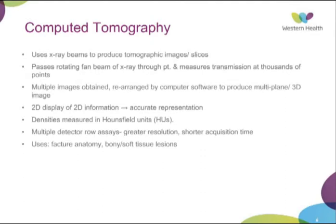Computed tomography is very widely used in orthopaedics, especially with advances in 3D reconstruction. It uses x-ray beams to produce tomographic images — a rotating fan beam rotates around the patient, measuring thousands of points, producing multiple slices. Computer software programs these together to form a 3D multi-plane reconstruction. The value of CT is we get 3D reconstruction and multiple planes: sagittal, coronal, axial, etc. It's a 2D display of 3D information when scrolling through slices, giving a very accurate representation. With CT you can tell exactly where something is in relation to the patient, which is important for visualising lesions and fractures.